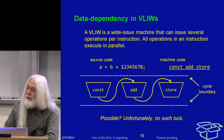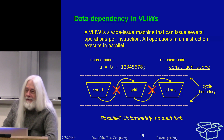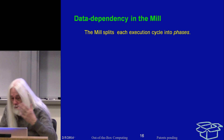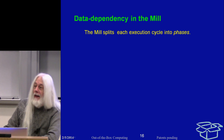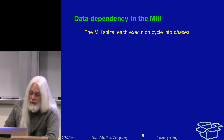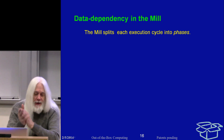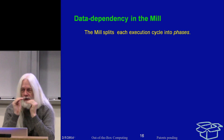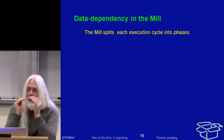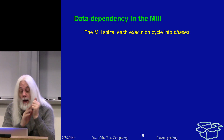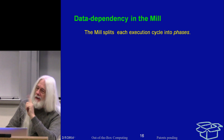The VLIW is going to have to take three cycles, just like a RISC would have to take three cycles. The Mill splits each instruction cycle into phases. These are not sub-clocks — we don't actually have a bunch of little clocks inside the big clock; there's only one big clock. Phasing is a conceptual model.